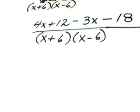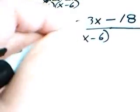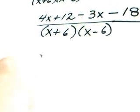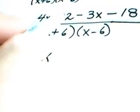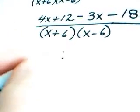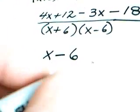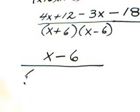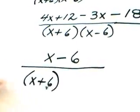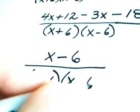And at this point, what we're going to do is we're going to look in this new numerator that we just came up with, and we're going to collect like terms. 4x minus 3x becomes x. Of course, the 12 minus 18 becomes negative 6. And in the denominator, we still have x plus 6 times x minus 6.